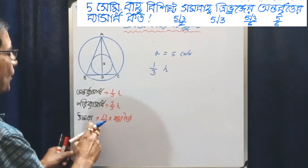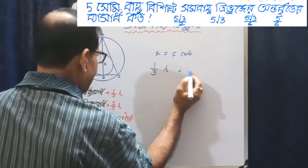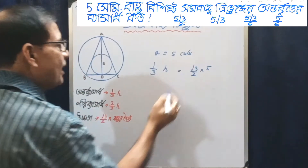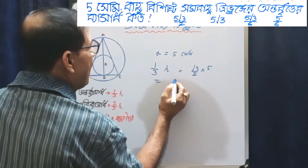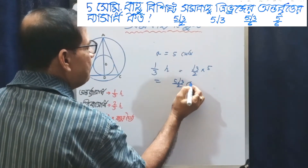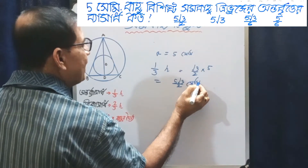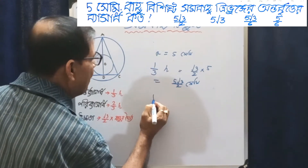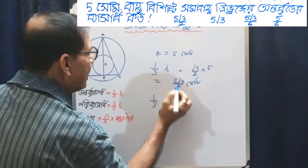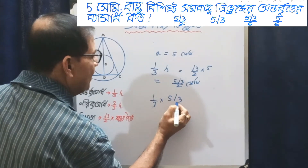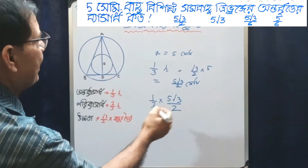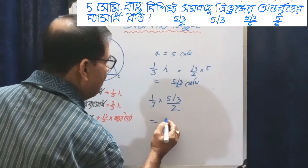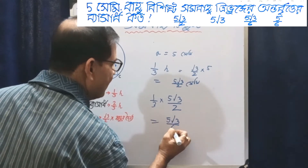This is the answer. 5 root 3 by 2. Now you can do this. The result is 5 root 3 by 6 cm.